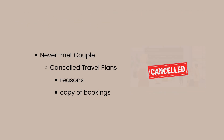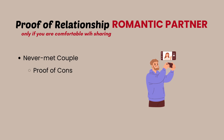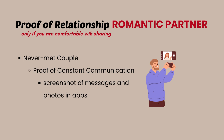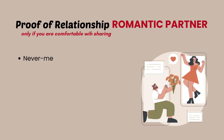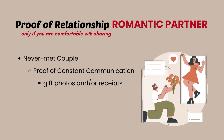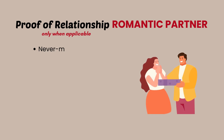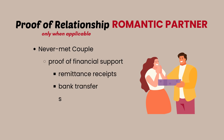Next, proof of your constant communication — this is the personal, intimate part that some partners are uncomfortable sharing. This includes a screenshot of the messages you have and the photos in the apps you are using, whether that's Facebook Messenger, WhatsApp, or other messaging apps. If you have been sending each other gifts, include a copy of the gift photos and/or receipts. And if your partner or host is financially supporting you, include a copy of the remittance receipts or bank statements showing the financial support you are receiving.